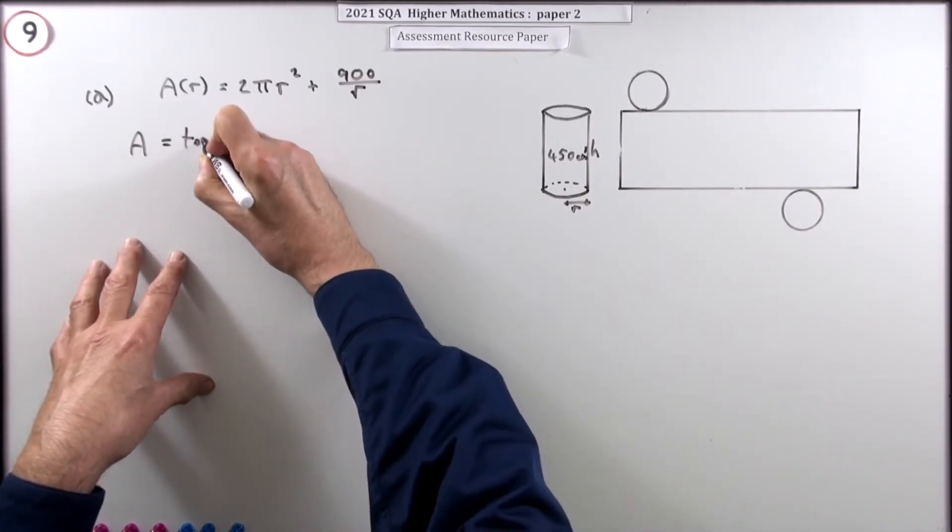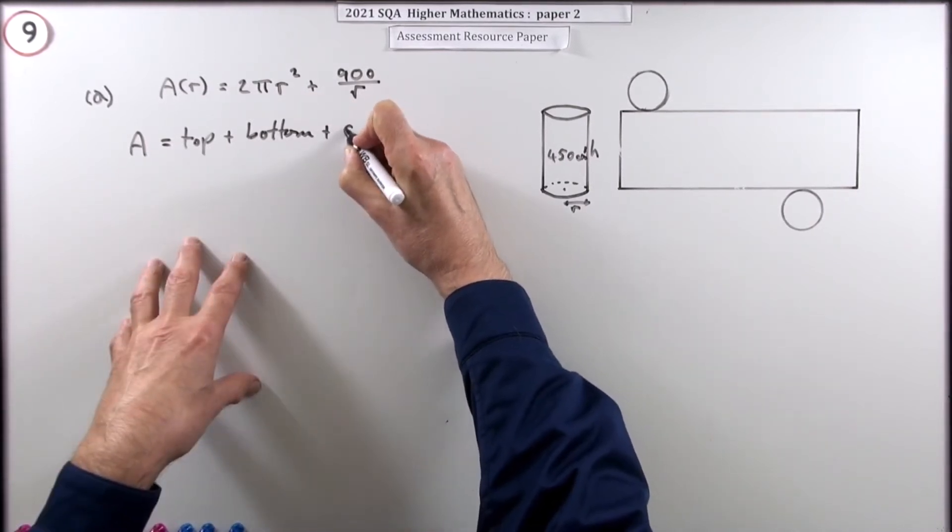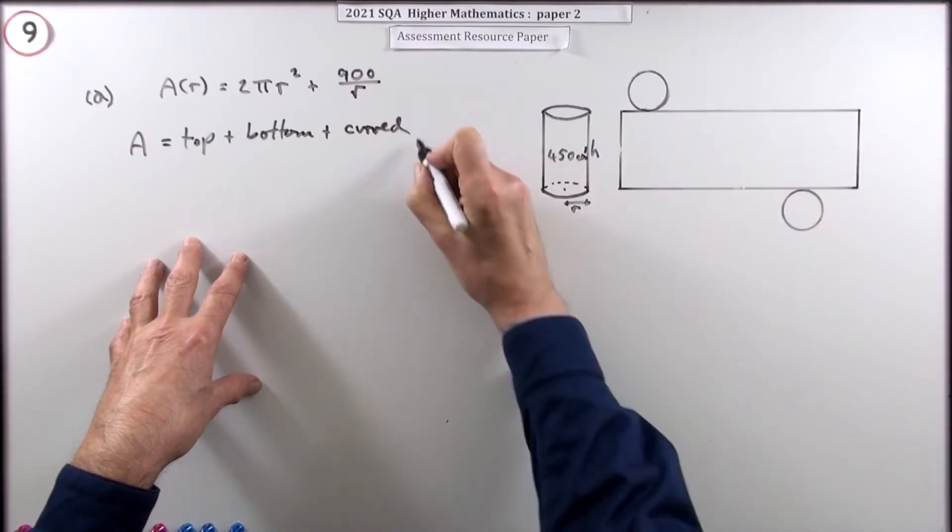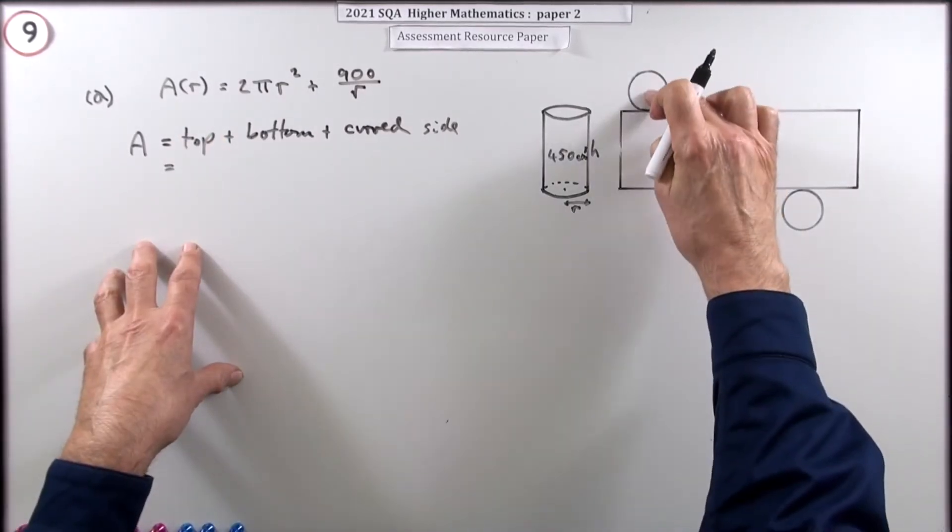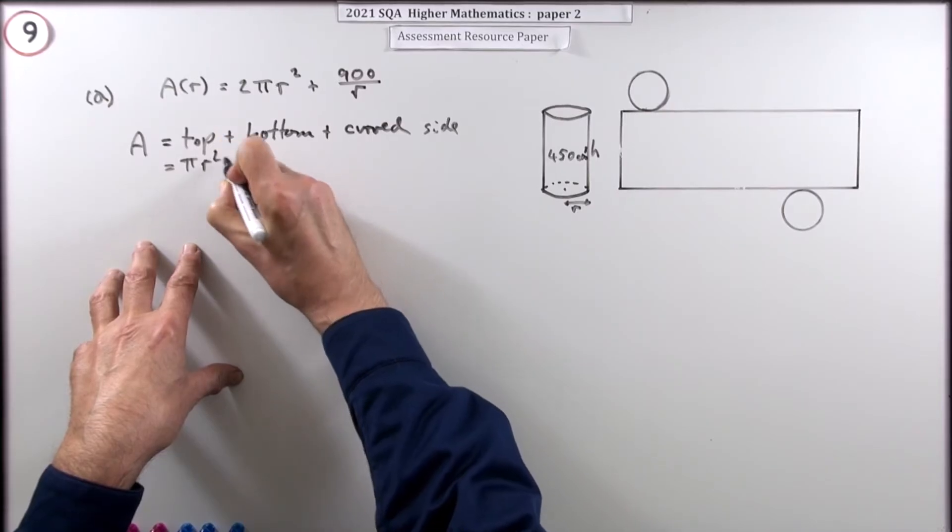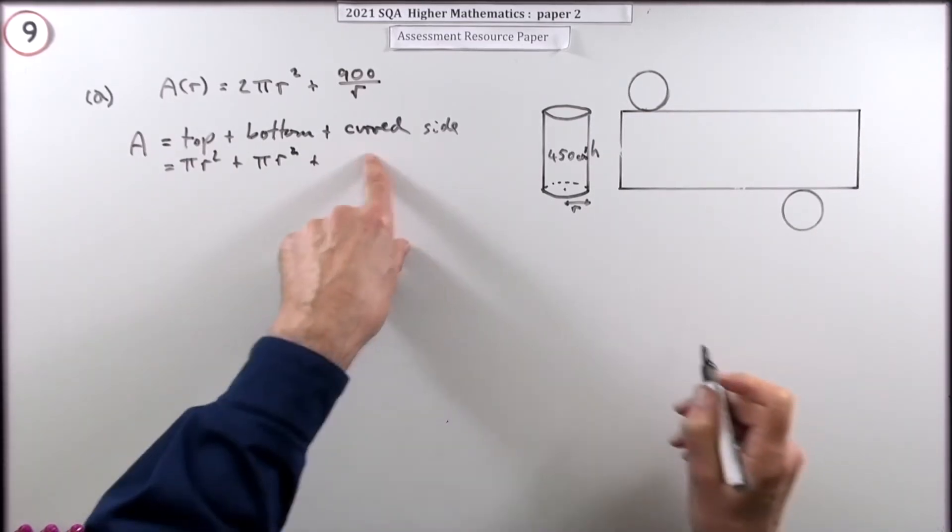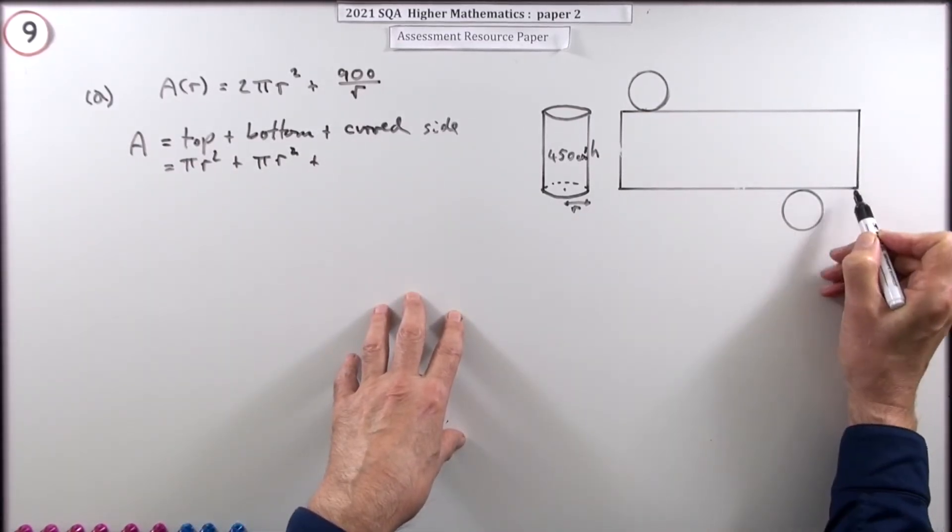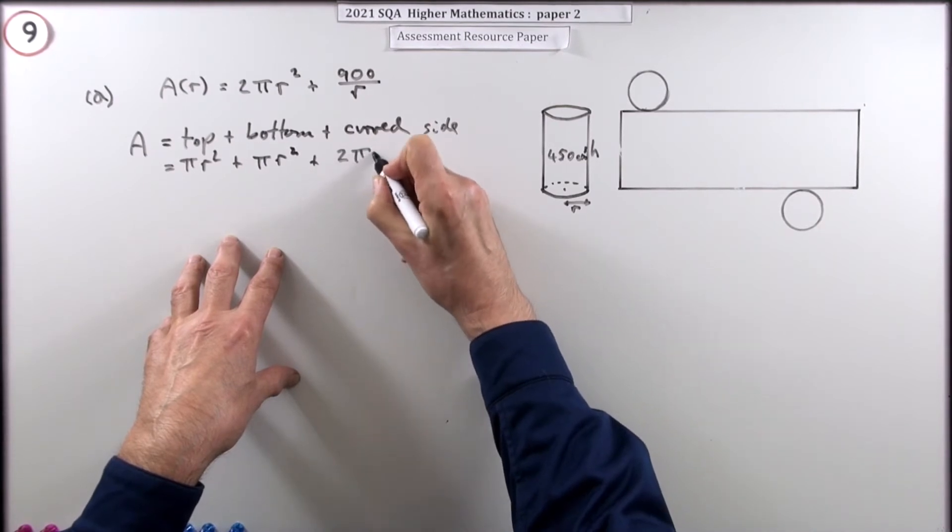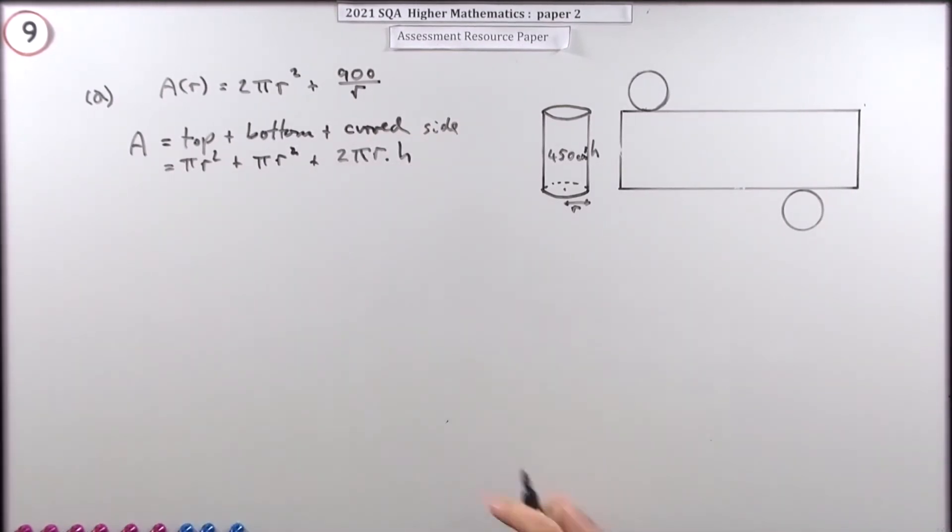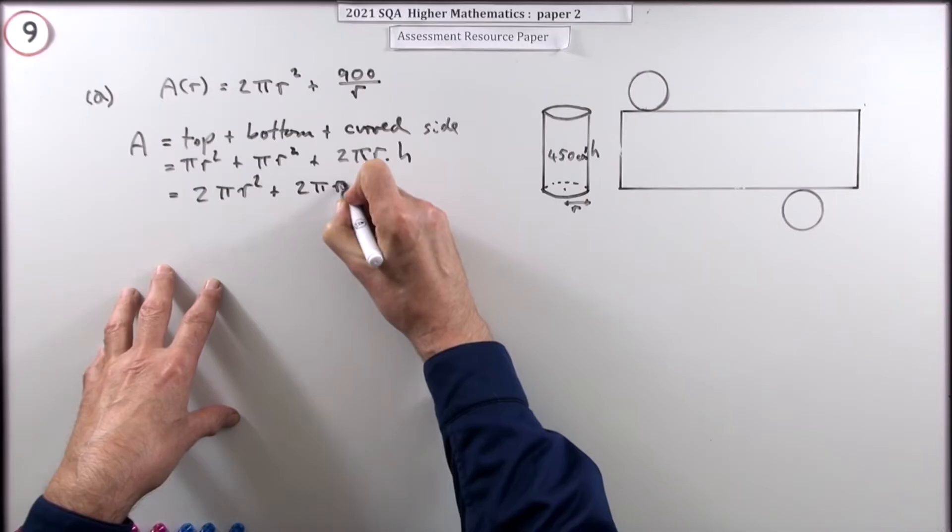Well, it's made up of two circles and a rectangle. So it's made up of the top, the bottom, and the curved side. Those are the three parts. Circle, circle, rectangle. So what would their areas be? Well, the top's a circle of radius r, so that's pi r squared. The bottom's an identical, a congruent circle, pi r squared. And the curved side is going to be the circumference times the height. So the circumference, you can either call it pi d, I'm going to call it two pi r times the height. So I'll just tidy that up. So that's two lots of pi r squared plus two pi r h.